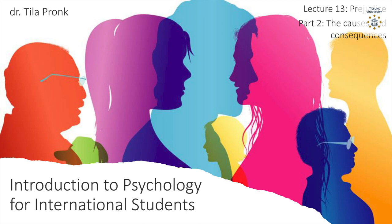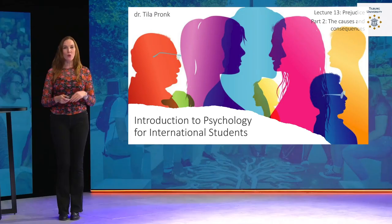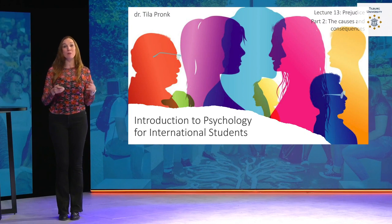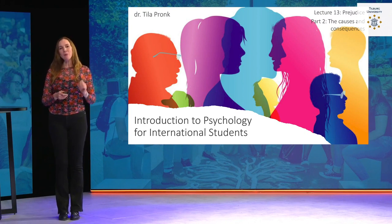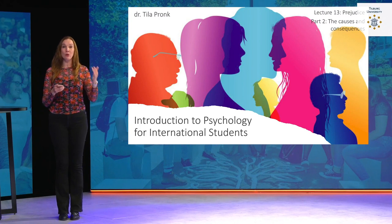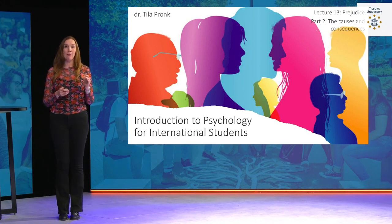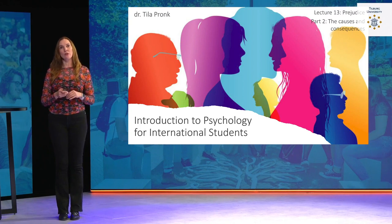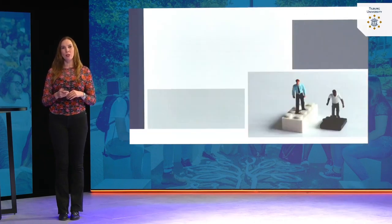This is part two of lecture 13. In the first part we defined prejudice and we saw that there are different ways of measuring it, for example through the IAT. In the second part of the lecture we're going to talk about the causes and also the consequences of prejudice, because especially the consequences of prejudice, if you're part of a minority group, are huge and can be quite devastating. So let's turn to those first.